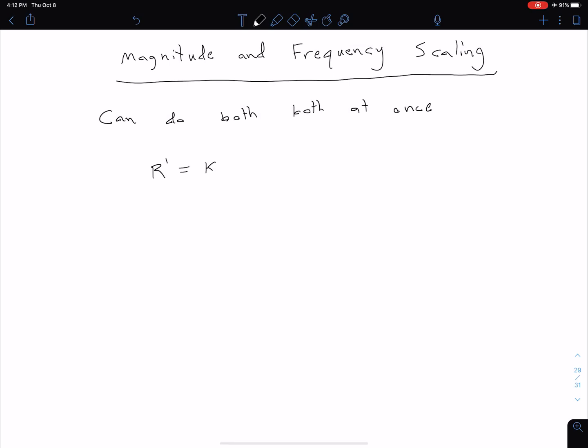So our R primed is going to be Km times R. Our L primed is going to be Km divided by Kf times L. Our capacitance primed, C primed, is going to be equal to C divided by Km Kf. And then finally our omega primed is equal to Kf times omega.